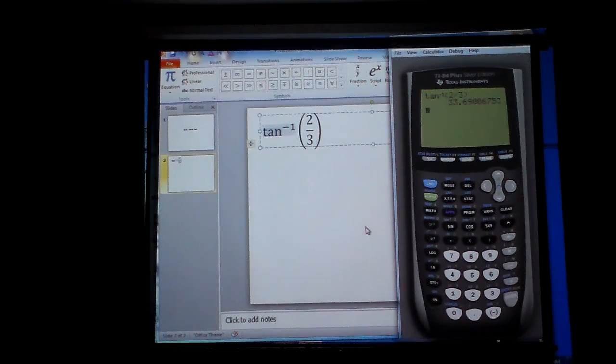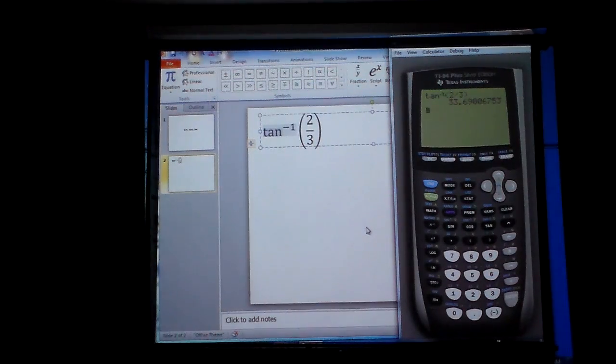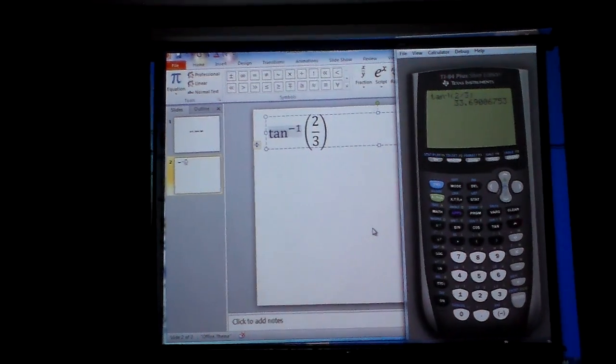The thing you've got to remember is second tangent gives you the angle, because it's giving you the ratio proportion first. So now I hit second tangent, put it in, enter, and I now have that particular angle.